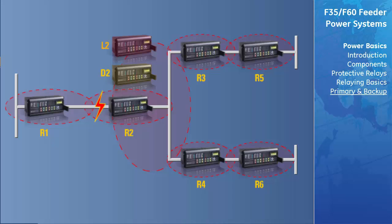When a fault occurs at location F, relays R1 and R2 are the primary relays programmed to identify and clear the fault. Assuming R2 fails to operate, duplicate relay D2 should have operated at the same time. If D2 has also failed, the local backup relay L2 should now operate a short time after the primary and duplicate relays due to its coordination with them. If all three fail, relays R3 through R6 provide remote backup to R2, D2, and L2.